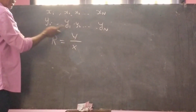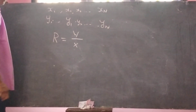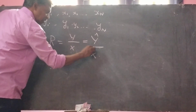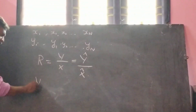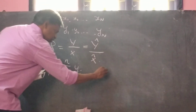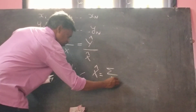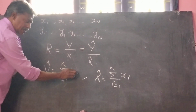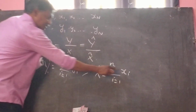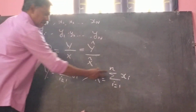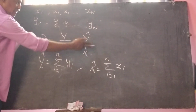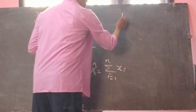Sometimes, capital Y may not be available and capital X may not be available. So in that case, we substitute y_cap instead of Y and x_cap instead of X. Here, y_cap is nothing but summation i equal to 1 to small n of yi, and capital x_cap is nothing but summation i equal to 1 to small n of xi. Here yi, that means y1, y2, etc., yn are sample observations on y, and x1, x2, etc., xn are sample observations on x. So based on the sample totals of x and y, we may find the ratio using this formula. This ratio is nothing but the ratio estimator, which is denoted by the symbol r_cap.